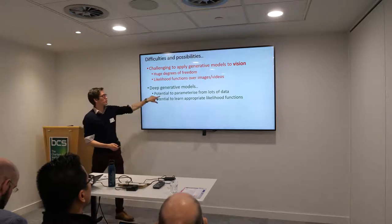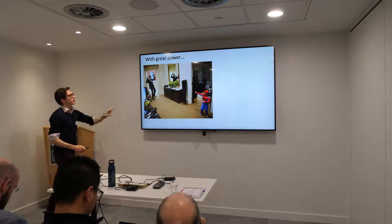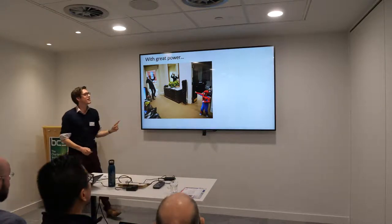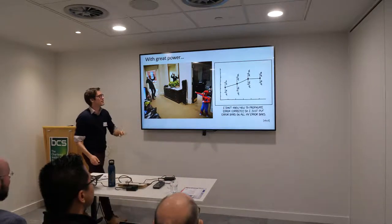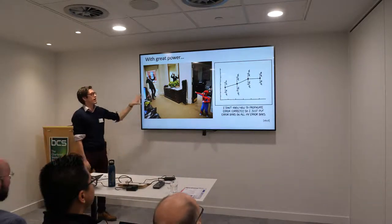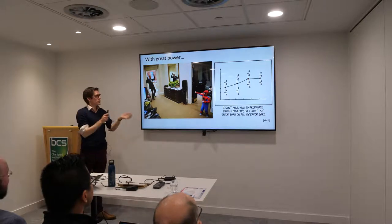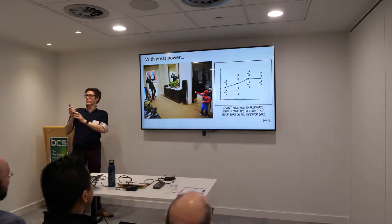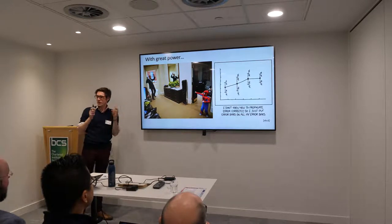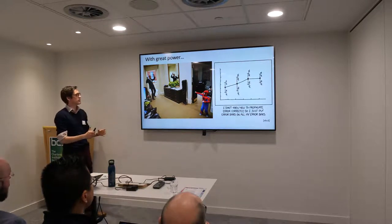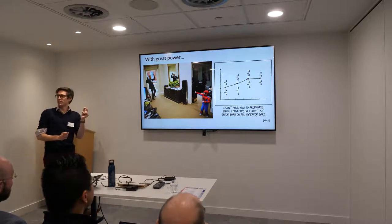But there's a problem with hugely parameterizing things from lots of data. With great power comes great responsibility. One of my favorite XKCDs is about error propagation — if we're not careful about how we treat all these parameters, we don't necessarily get a distribution back and we don't learn a likelihood. It's not for free that you automatically learn a likelihood. You have to be careful about how you construct and use the network to make sure the likelihood is what you actually wanted.